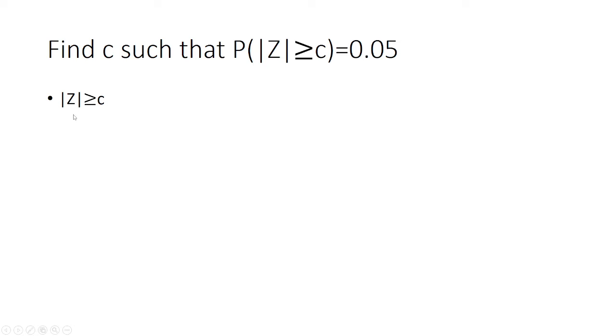Let's focus on the absolute value of Z being greater than or equal to c. There are two cases: the first when we remove the absolute value, and the second when we flip the inequality and put a negative in front of c. We break this up into P(Z ≤ -c) plus P(Z ≥ c).